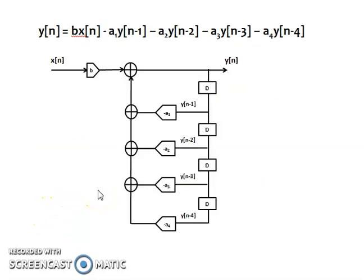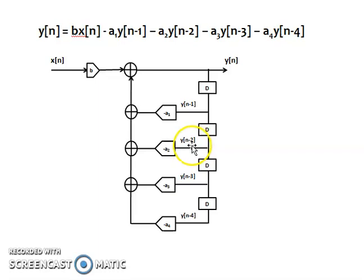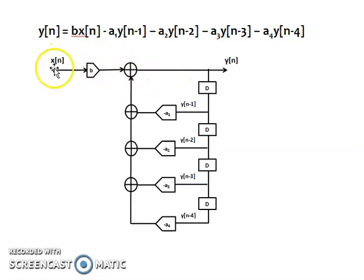To simulate this difference equation, here is what we obtain. The current input is scaled by b, and that is added to: -a1 times the first delayed output, -a2 times the second delayed output, -a3 times the third delayed output, and -a4 times the fourth delayed output. We delay y(n) to get y(n-1), delay again to get y(n-2), again for y(n-3), and again for y(n-4). These are all multiplied by their respective scalar values and summed with the scaled x(n) to give the current response y(n).